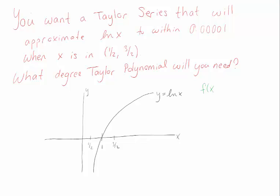Now let's remember what our error is going to look like. The actual function minus the Taylor polynomial approximation equals basically the next term in the Taylor expansion, except the derivative is evaluated at some unknown point c. So it looks like 1 over (n+1) factorial times the (n+1)th derivative at some point c, times (x minus a) to the power n+1. Since we want it within a certain tolerance, we care about the magnitude, so we take absolute values.